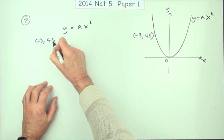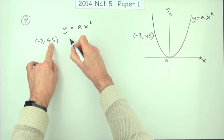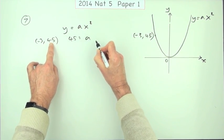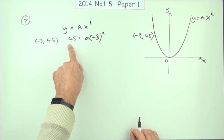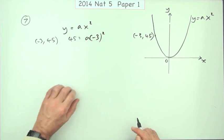So if I use the point negative 3, 45, the y is 45. I don't know what a is. The x is negative 3. I need to square it. There's a little equation with only one unknown. I can solve it.